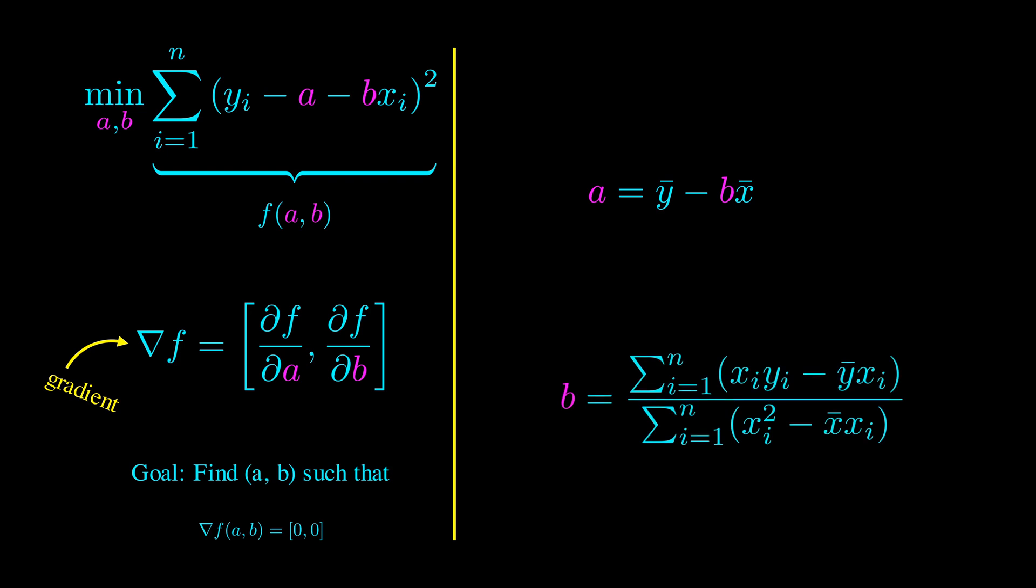So, we can get closed form solutions for a and b, which is very nice and means we can find the least squares solution very quickly. Going back to our original plot, we can now add the least squares line. This is the best line from minimizing the least squares objective.